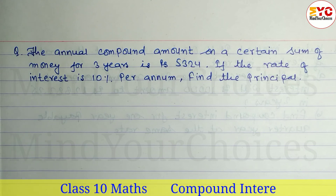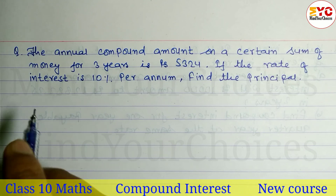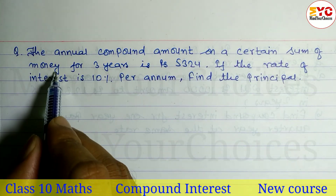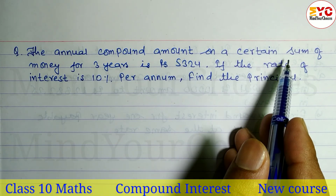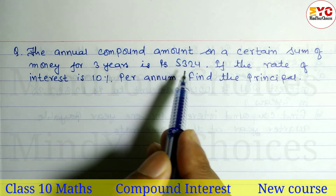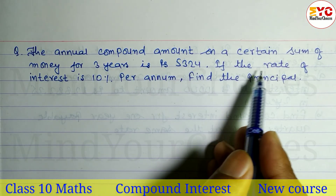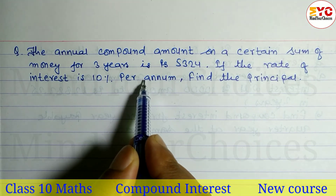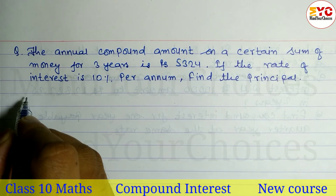Class 10 compulsory math, compound interest. The question: the annual compound amount on a certain sum of money for three years is rupees 5324. If the rate of interest is 10%, find the principal.